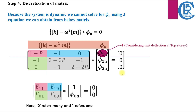You might be wondering how we can calculate three unknown mode shape vectors. Although we have three equations from the matrix, due to the dynamic state of the system a direct solution is not possible — this is where discretization of the matrix comes into play. For simplicity, let's consider the mode shape at the top story equal to 1. By setting this reference point we establish a basis for the mode shapes at the stories below, expressing them as ratios relative to the top story.